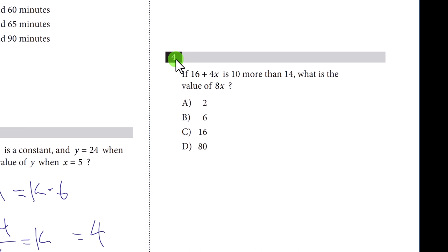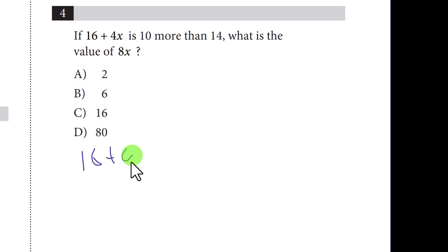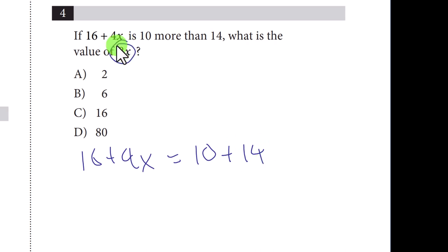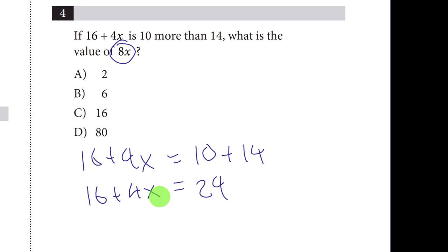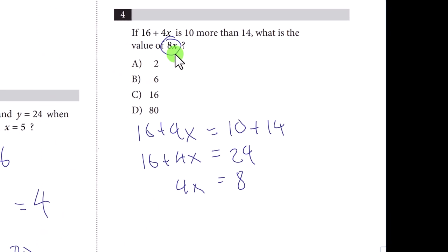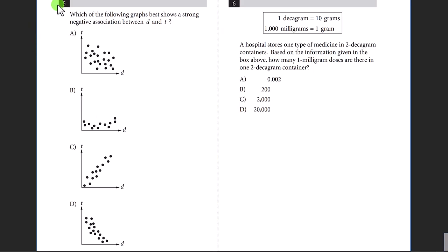Question four is a word problem. Put it into an equation: 16 plus 4x is 10 more than 14, so 16 plus 4x equals 24. Subtract 16 — we don't need to solve for x because we want 8x. Double both sides: 2 times 4x equals 8, and 2 times 8 equals 16. The answer is C.